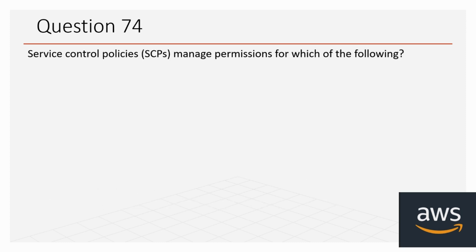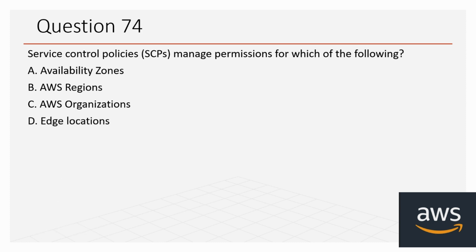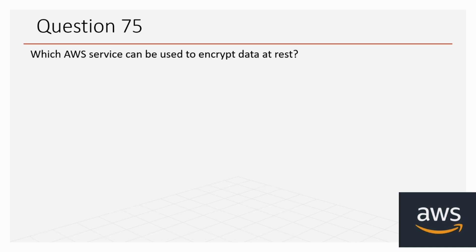Question 74: Service control policies manage permissions for which of the following? A: Availability Zones, B: AWS Regions, C: AWS Organizations, D: Edge locations. The correct option is C, AWS Organizations.